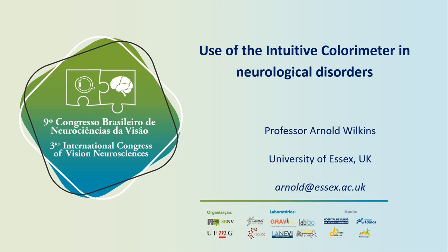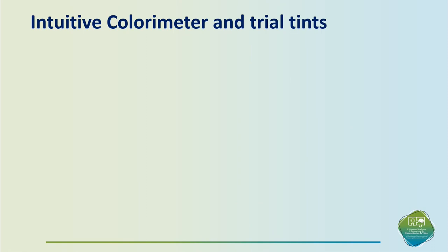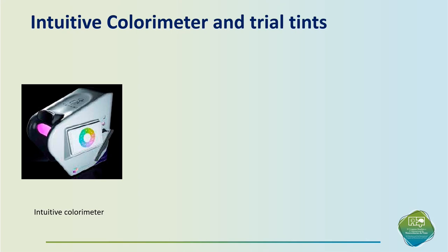Hello, thank you very much for the invitation. I shall be talking about the use of the Intuitive Colorimeter in Neurological Disorders. The Intuitive Colorimeter is simply a box that illuminates text with coloured light. We have a special method of choosing a colour that is optimal for looking at text, in which the hue and saturation are varied independently at constant brightness. The patient has the chance to select exactly the chromaticity that they are most comfortable with.